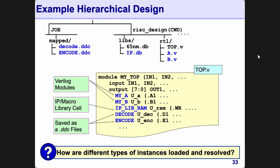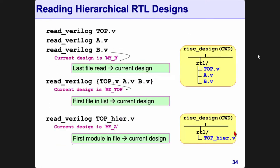It could be an analog block — it doesn't matter. It's some kind of IP, or even IO pads. Then we have two other blocks called decode and encode. These two are Verilog files but they were already compiled, maybe by a colleague or whatever, and saved as a DDC file — a compiled design. So it contains a variety of blocks. How do we read this thing?